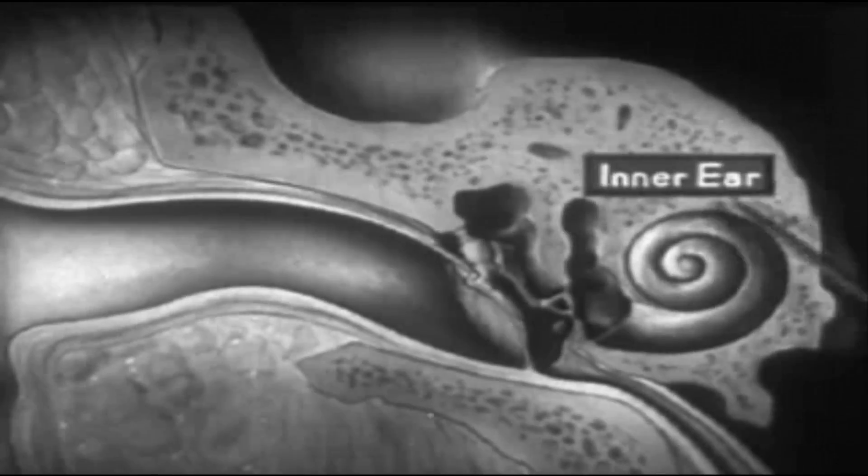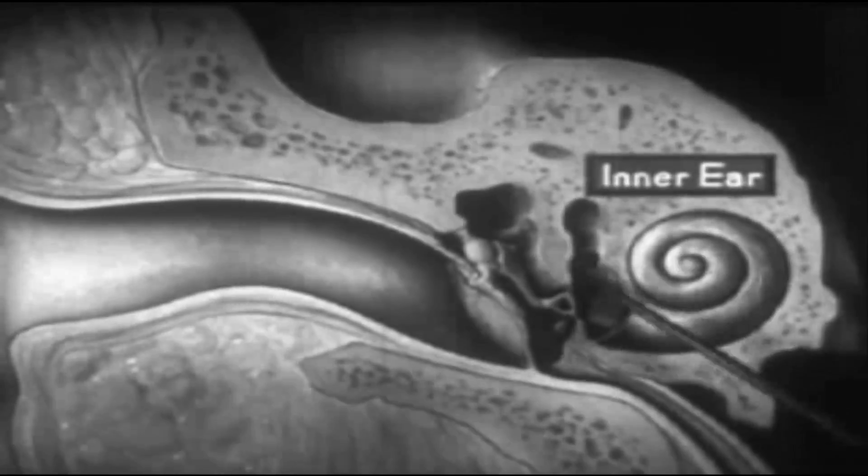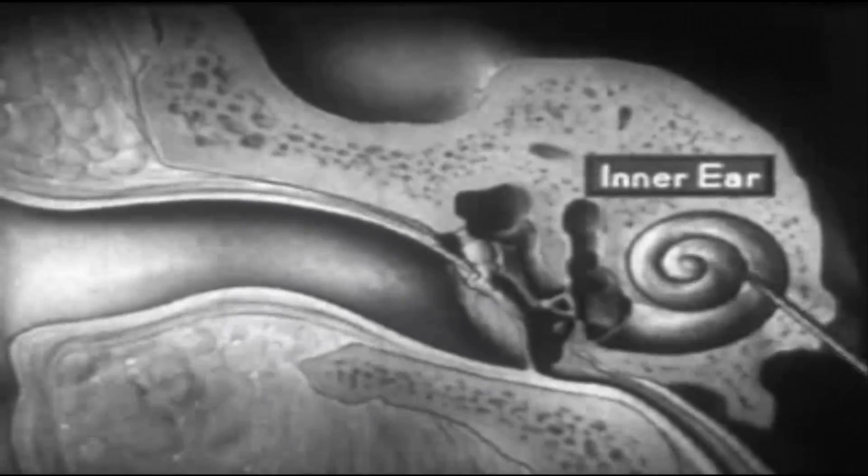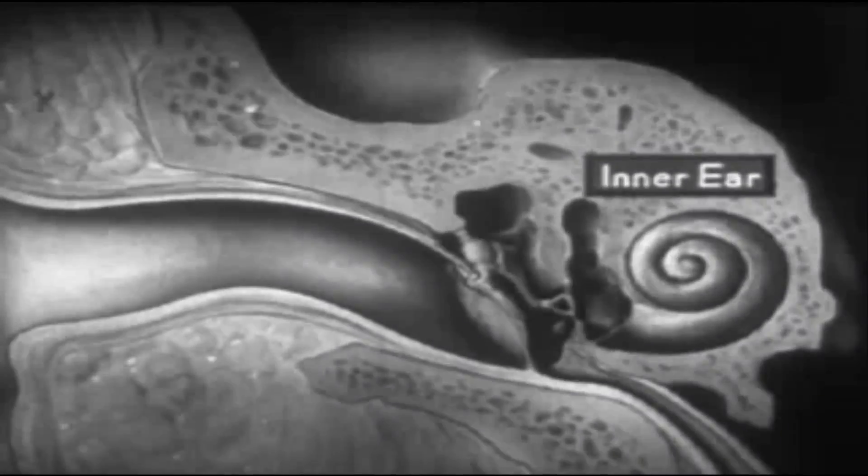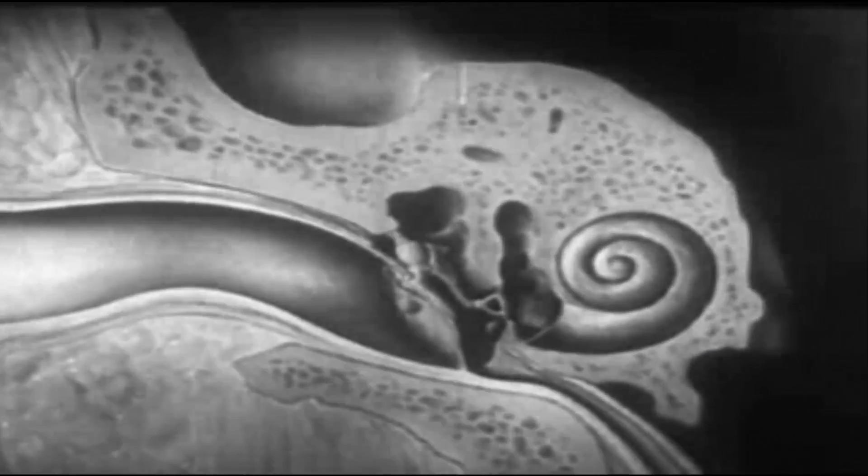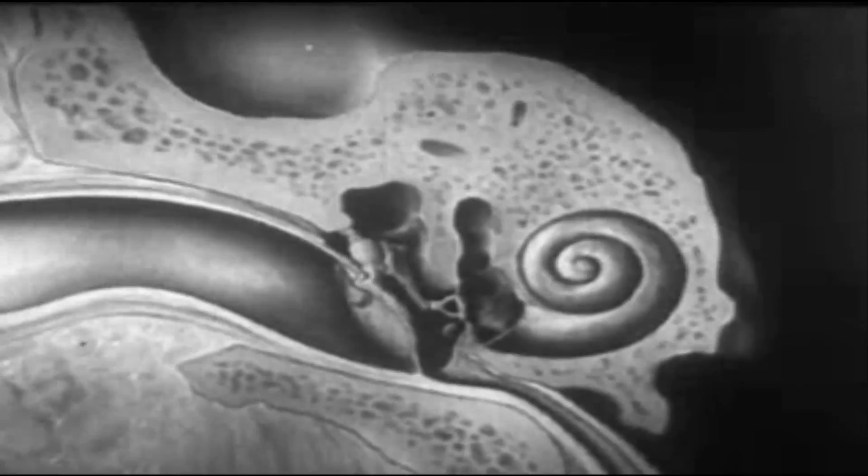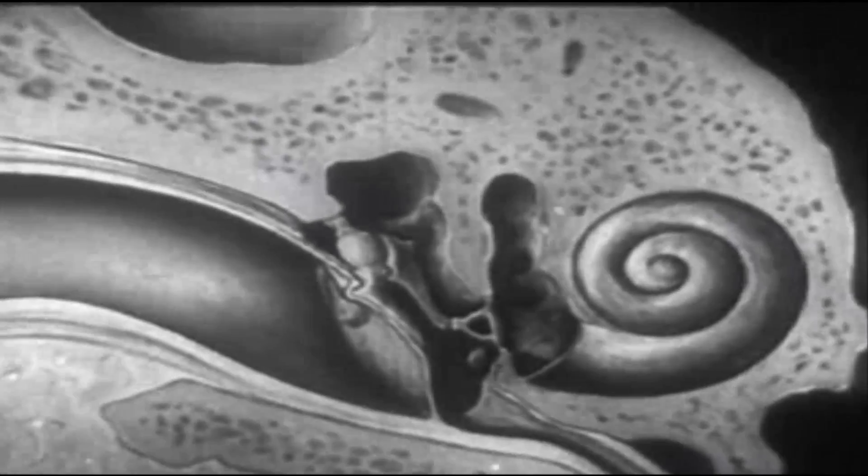Beyond the middle ear lies the third part, called the inner ear or labyrinth. Unlike the outer and the middle ear, this part is filled with a liquid instead of air, and contains the delicate apparatus which transforms sound waves into nerve impulses.